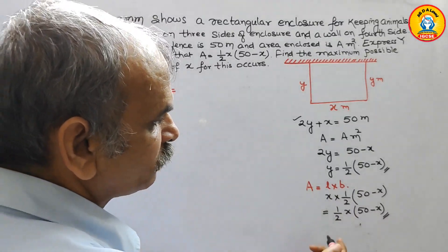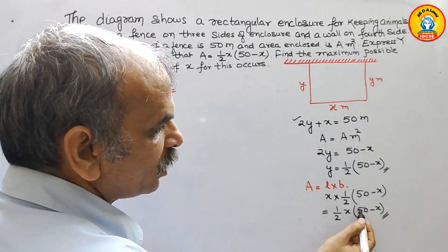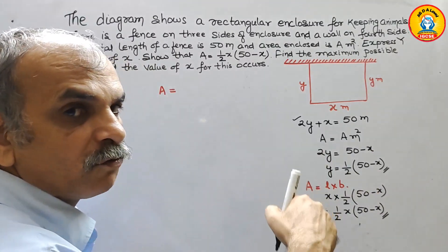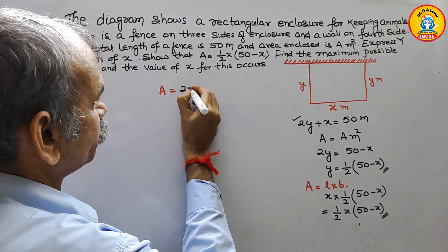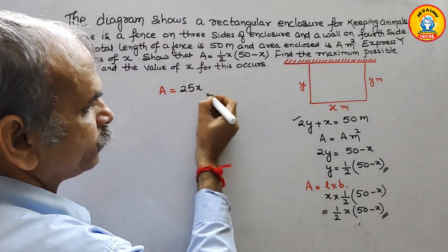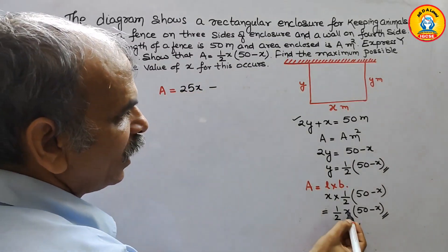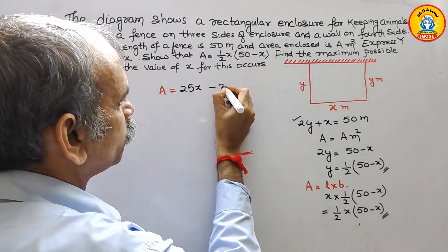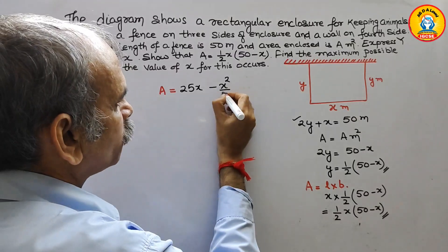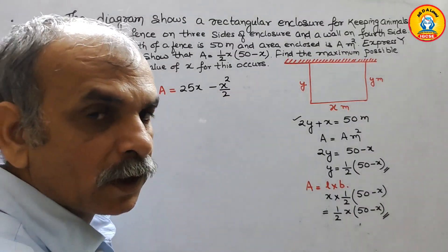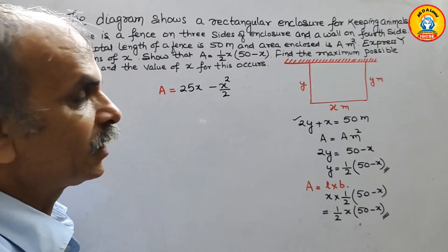So this is 1 by 2 x into 50 is 50x by 2 is 25x minus x square by 2. Now we have to go for A dash, differentiation of that.